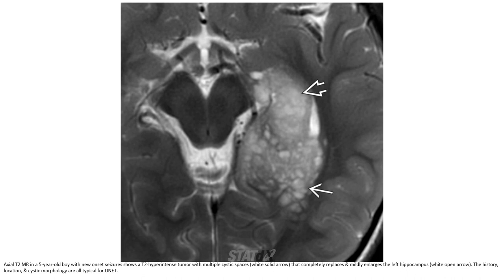T2 MRI of a 5-year-old boy with new onset seizure. T2 hyperintense tumor with multiple cystic spaces that completely replaced and mildly enlarged the left hippocampus. The story, location, and cystic morphology are all typical for DNETs.